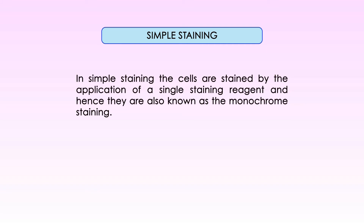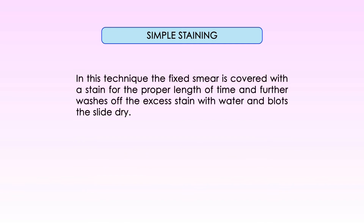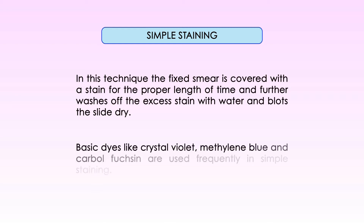In simple staining, cells are stained by application of a single staining reagent, and hence are also known as monochrome staining. The purpose is to determine the shape, size, and arrangement of bacterial cells. The fixed smear is covered with a stain for the proper length of time, excess stain is washed off with water, and the slide is blotted dry. Basic dyes like crystal violet, methylene blue, and carbol fuchsin are used frequently.